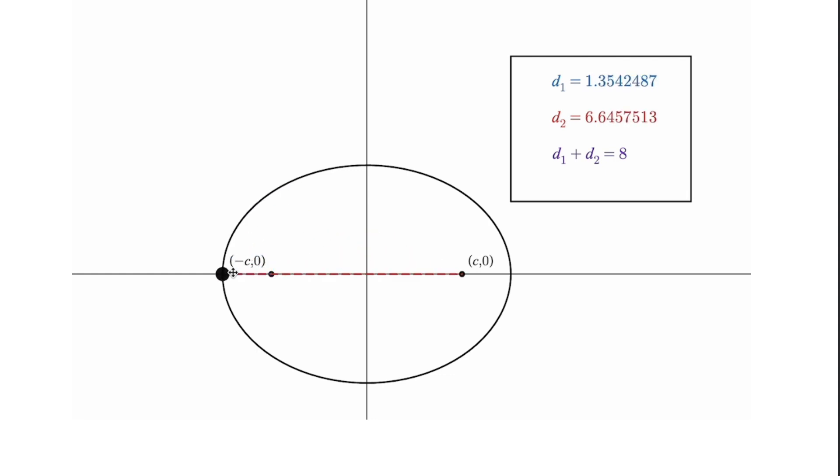If we take the points that are furthest from the center at zero zero, that's this leftmost point right here and this rightmost point over here. Those are called the vertices of the ellipse. They are the points that are furthest away from the center.